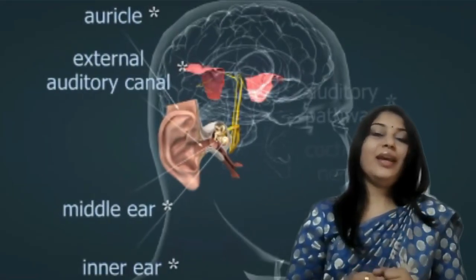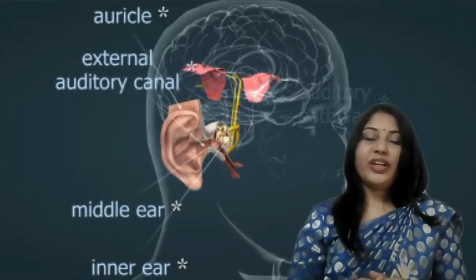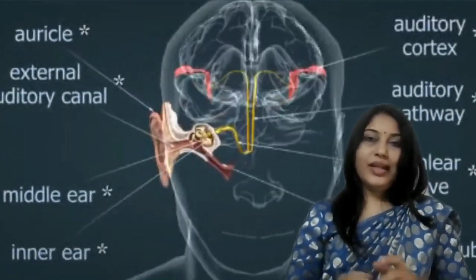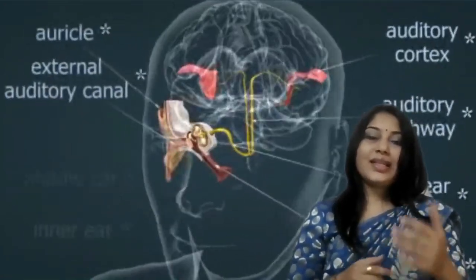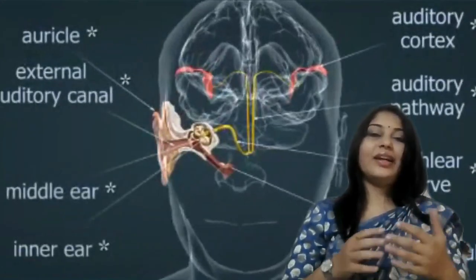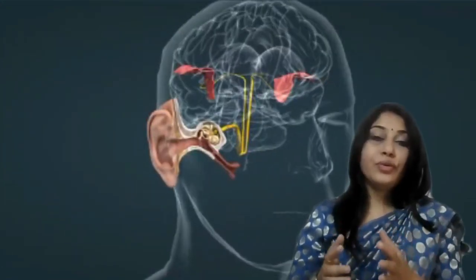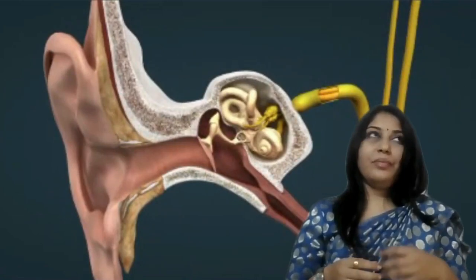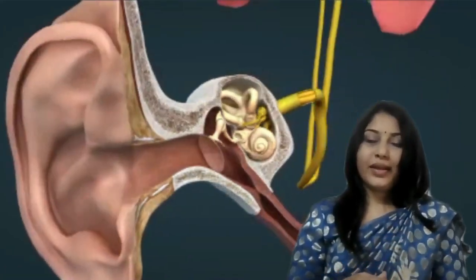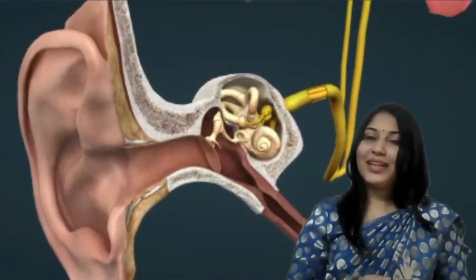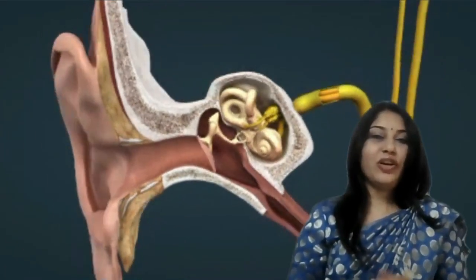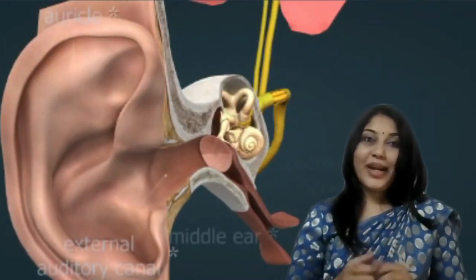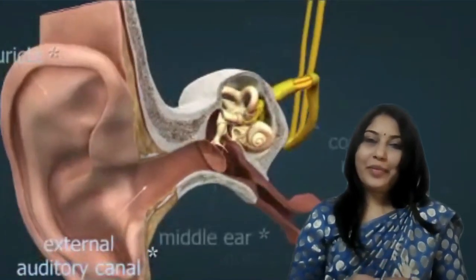So first we will see what is the structure of the ear, and later we will discuss how the different parts of the ear are involved in listening to sound. Our ear is in three parts.